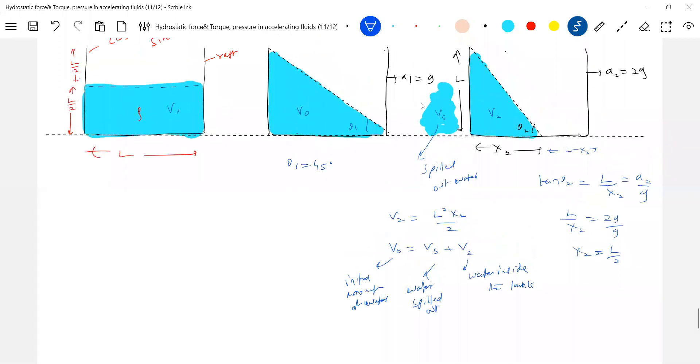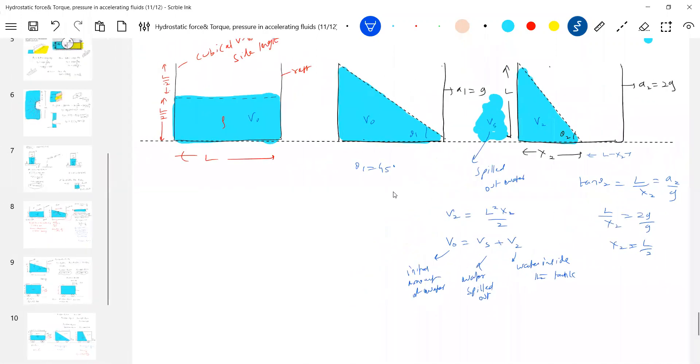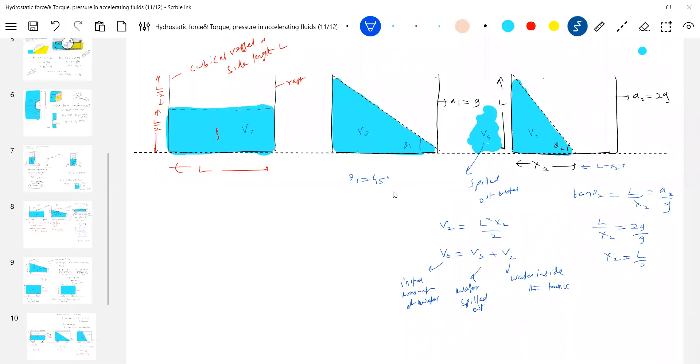Actually for this you need - no need, it's all something very general observation. So how much spilled out water? v naught is equal to v2. v2 is what? l square x2 by 2. What is x2? x2 is l by 2, substitute that.